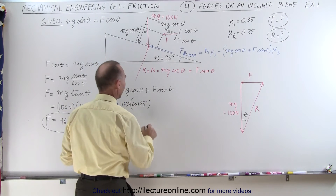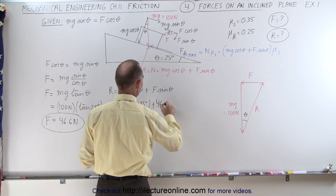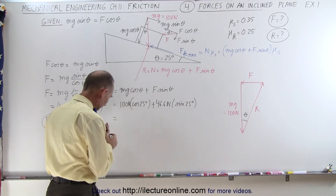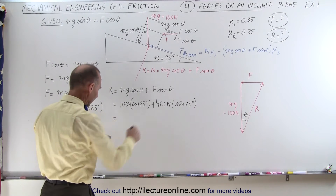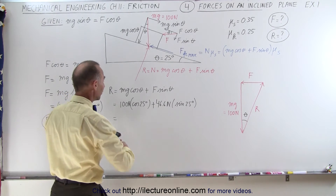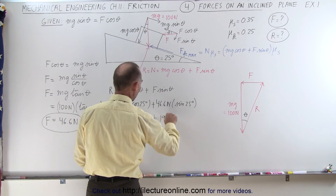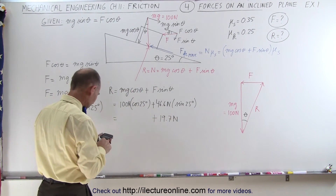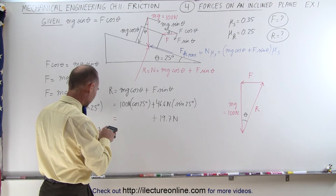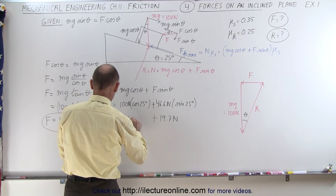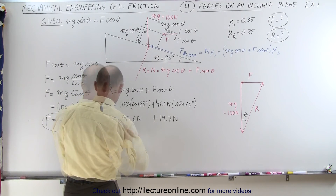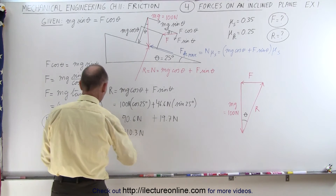Since we already have this in the calculator: 46.6 times the sine of 25 degrees gives 19.7 Newtons. Then 100 times the cosine of 25 degrees gives 90.6 Newtons. Adding these together, we get 110.3 Newtons for the reaction force.